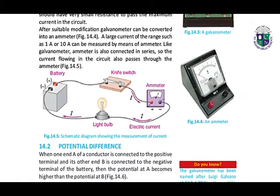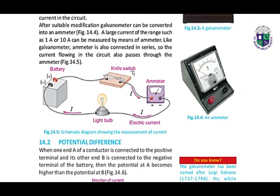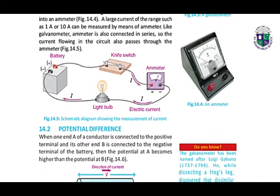After suitable modification, a galvanometer can be converted into an ammeter. A large current of the range such as 1 ampere or 10 ampere can be measured by means of the ammeter.